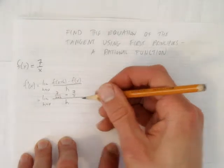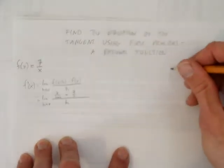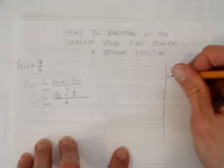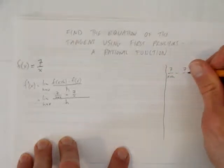So you can keep working in the fraction here, but I'm going to do some work on the side. When I have 7 over x plus h minus 7 over x, that's equal to common denominator.